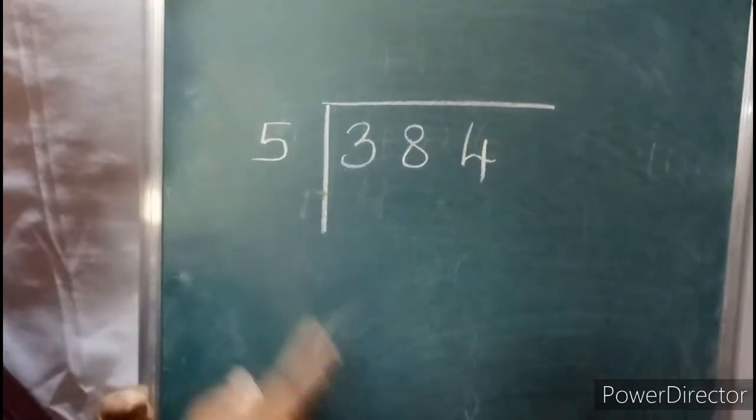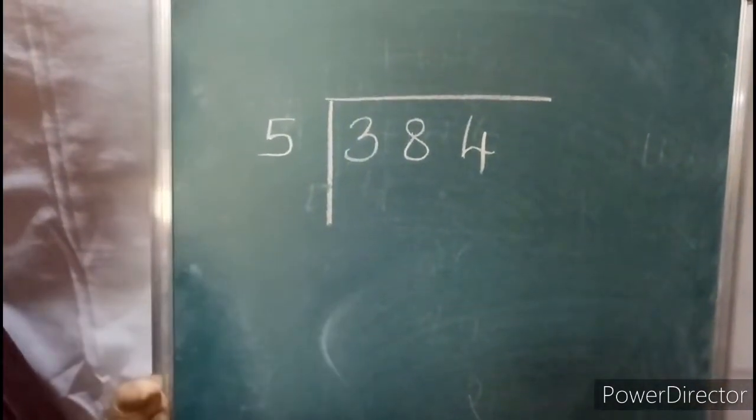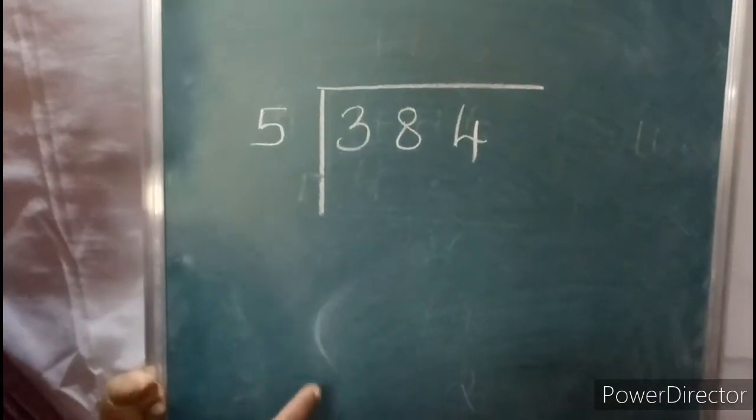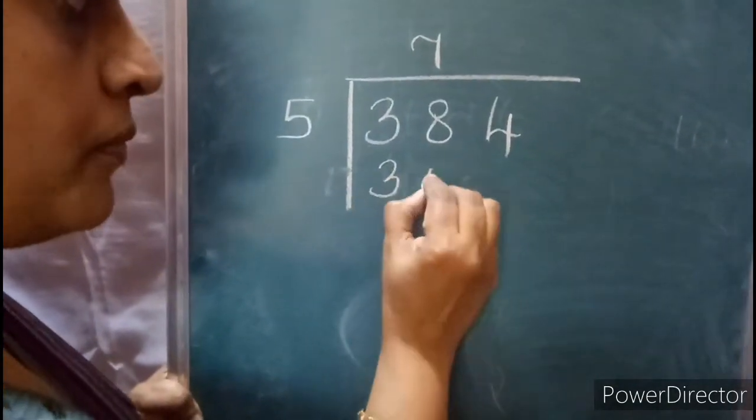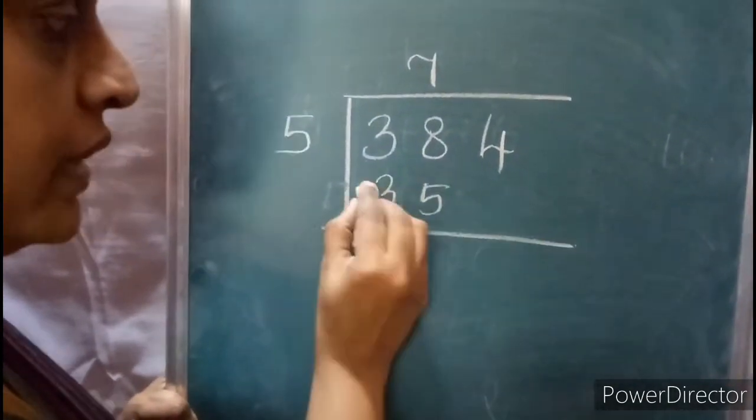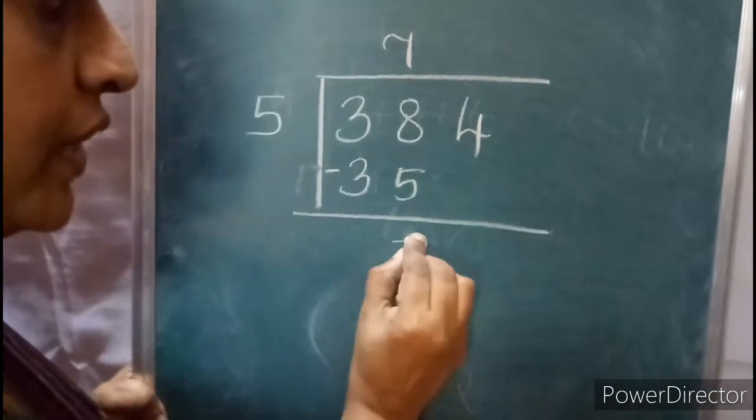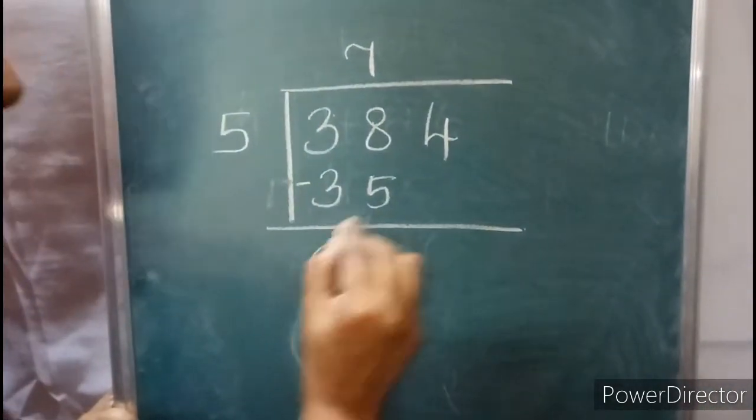In the 5 table: 5 ones are 5, 5 twos are 10, 5 threes are 15, 5 fours are 20, 5 fives are 25, 5 sixes are 30, 5 sevens are 35. Now subtract: 8 minus 5 equals 3, 3 minus 3 equals 0.